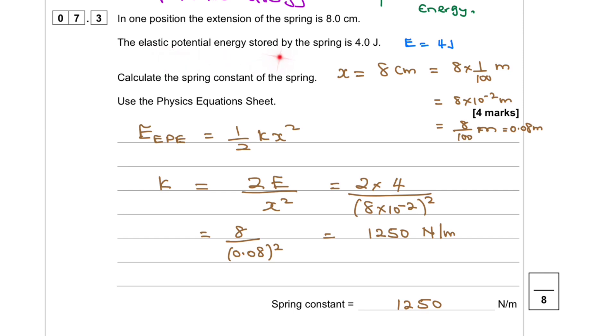Therefore, 7.3: In one position, the extension of the spring is 8 centimeters. The elastic potential energy stored by the spring is 4 joules. We need to calculate the spring constant, which is the k value.